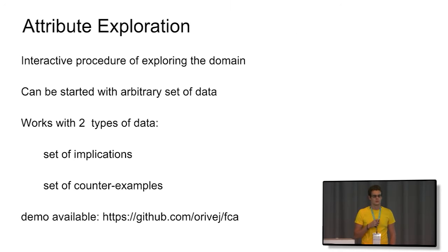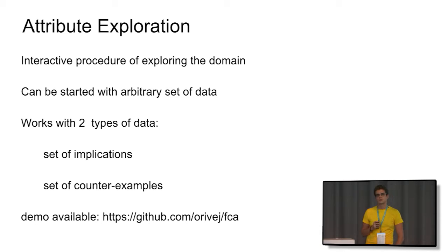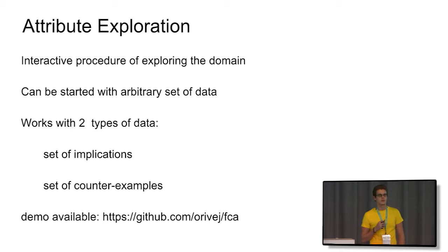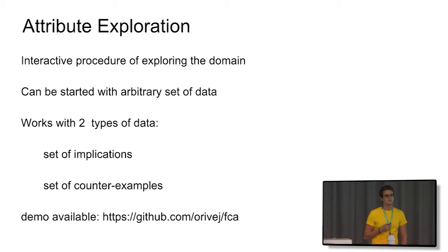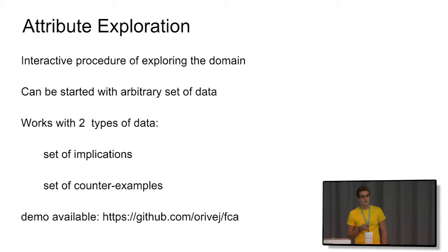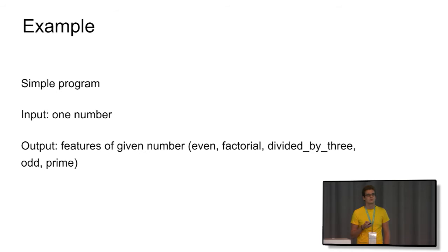To get from the formal context a set of implications, there is a procedure called attribute exploration. The main advantage is that it is interactive and cooperates with two types of data: on one hand, a set of implications expressed as 'if A then B'; on the other hand, a set of counter-examples which form your formal context. I have a demo available on GitHub — you can follow the example with me.